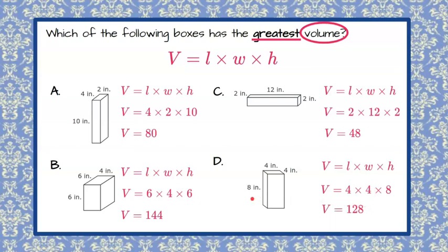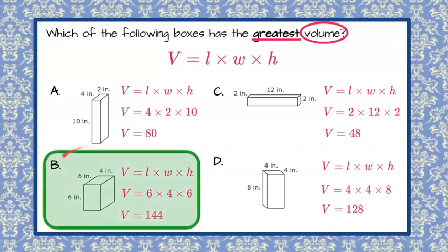Therefore, we can identify that the prism in B has the greatest volume with 144 cubic inches.